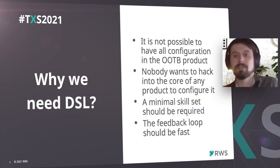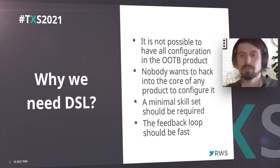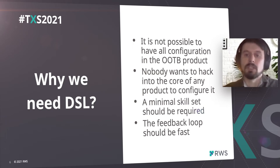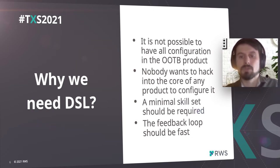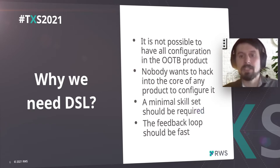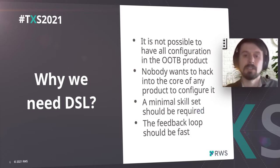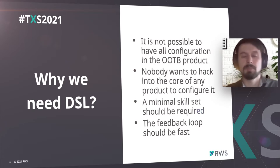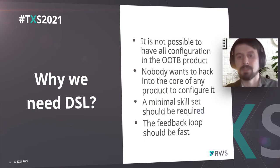One of the main drivers is that we can't provide configuration for all default elements and potential specializations in our out-of-the-box product, so we had to find a way to allow people to configure it. The second reason is that nobody wants to click into the core of any product to configure it — if you don't have a nice tool in place, most likely you will try to hack it. And that's also a problem because of release cycles: you want to keep your upgrade path as simple as possible to avoid unpredictable merge problems when you do an upgrade.